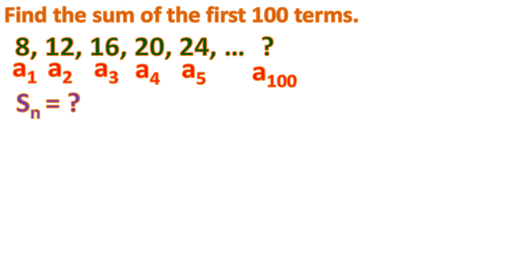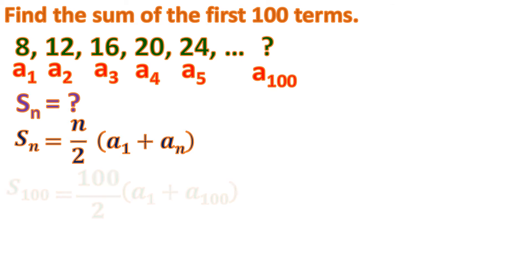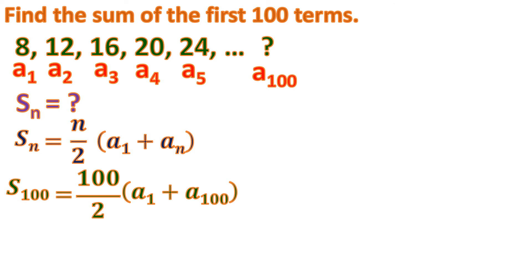So let us go back and solve the sum of the first 100 terms. We have the formula now. Let us change n to 100 because there are 100 terms. So we have S100 equals 100 over 2, times a sub 1 plus a sub 100. But we cannot solve it yet because we don't know a sub 100, the last term.